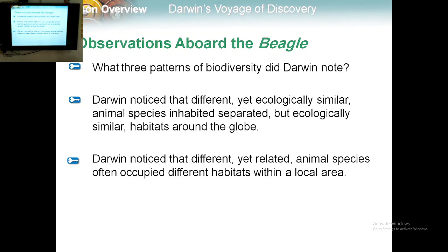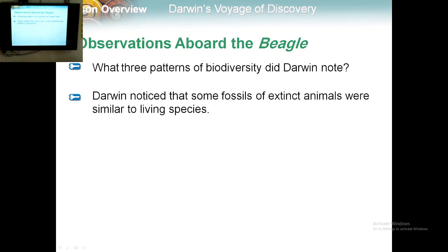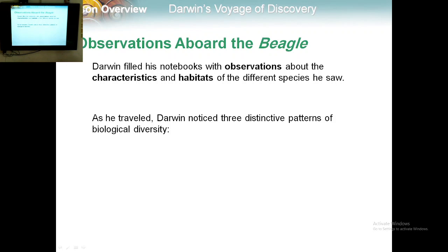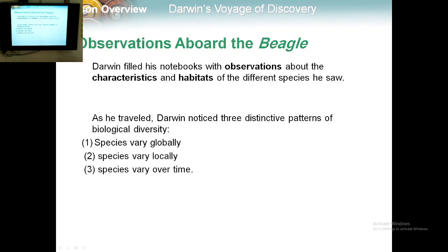The third one: Darwin noticed that some fossils of extinct animals were similar to living species. Darwin filled his notebook with observations about the characteristics and habitats of different species he saw. As he traveled, Darwin noticed three distinctive patterns of biological diversity: species vary globally, species vary locally, and species vary over time.